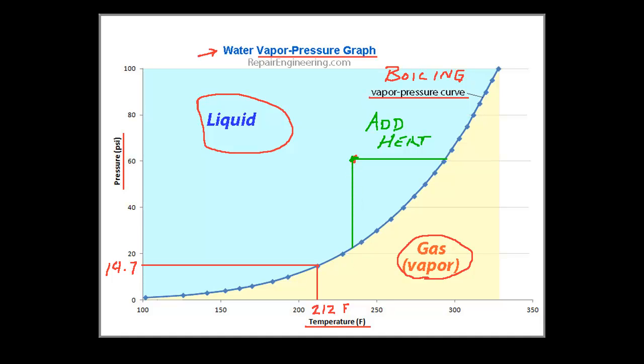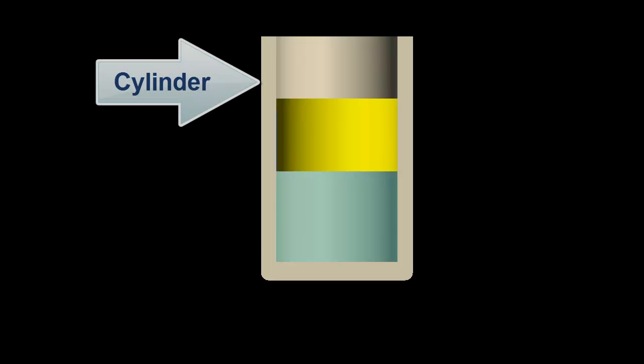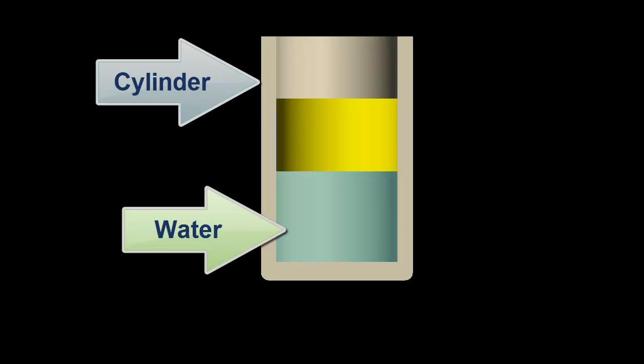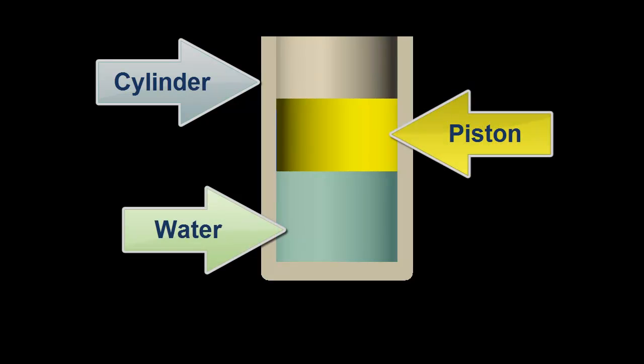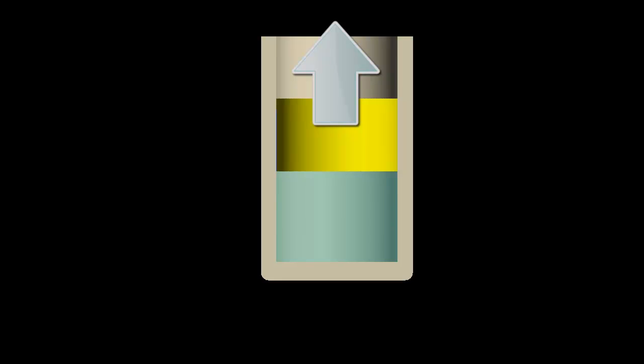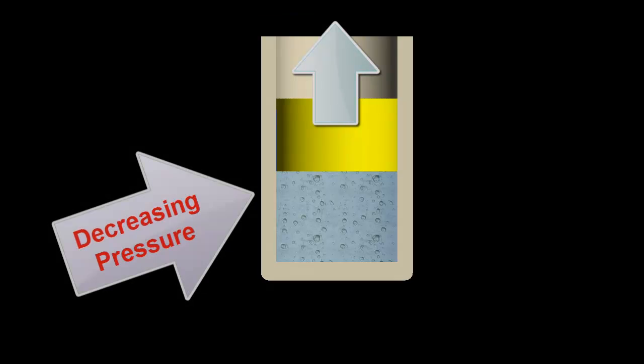Returning again to our earlier animation, we have the same setup — the same cylinder, water, and piston. Except in this example, instead of heating the water, we will actually lower the pressure in the cylinder by pulling upward on the piston, like this. I'll pause the animation midway through the process so that we can see what is happening.